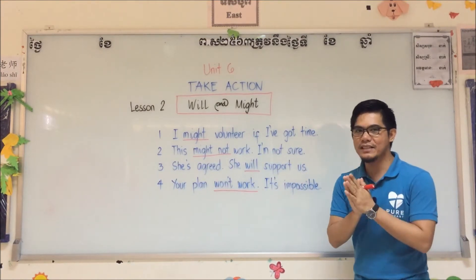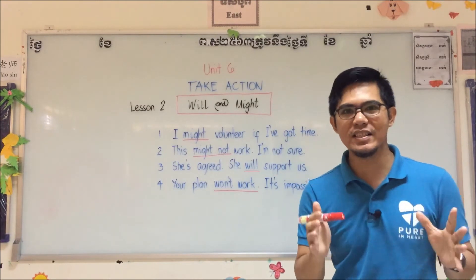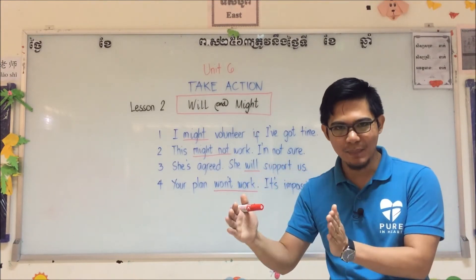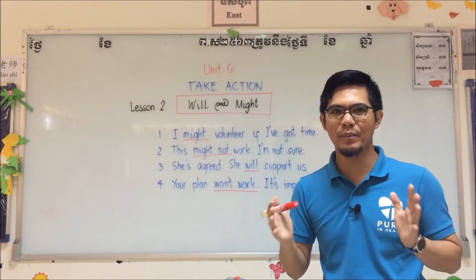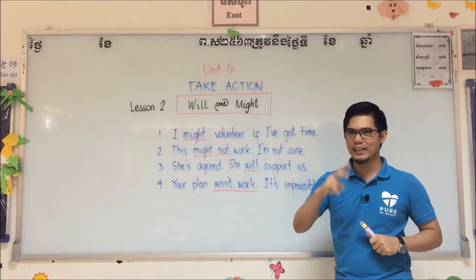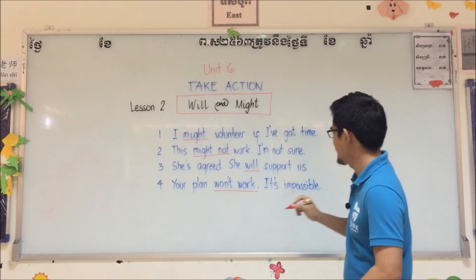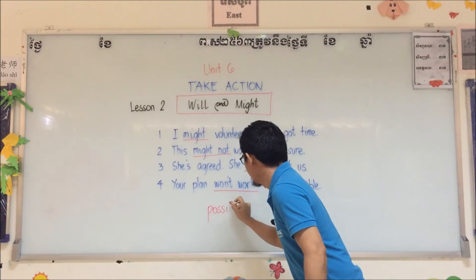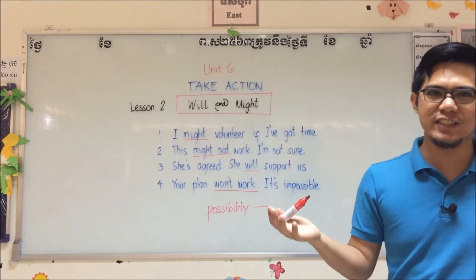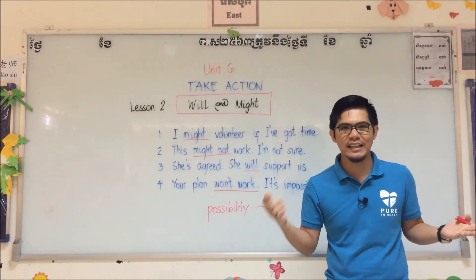Now, among the four sentences, which ones speak about possibility? Possibility — meaning it's the condition of being possible. Something might happen eventually; there's a condition of being possible. Which of these sentences speaks about possibility? Numbers one and two speak about possibility.